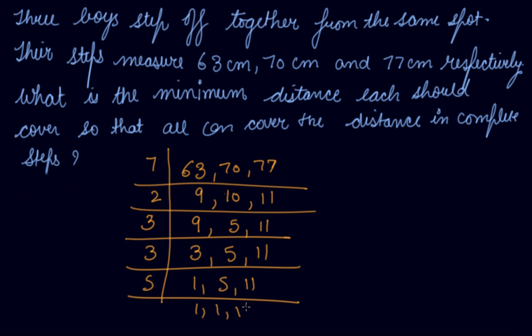Then 5, giving 1 and 11. And then 11, giving 1, 1, and 1. So the LCM of these numbers will be 7 × 2 × 3 × 3 × 5 × 11, which equals 6,930 centimeters. This means they have to cover at least 6,930 centimeters so that they all can cover the distance in complete steps.